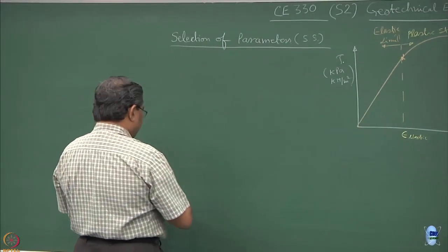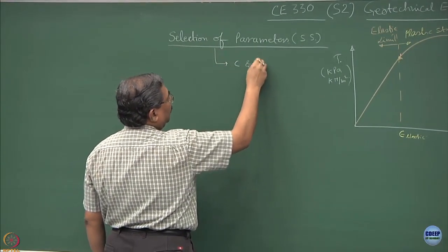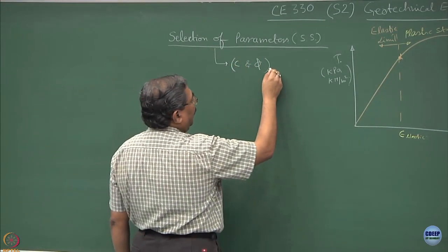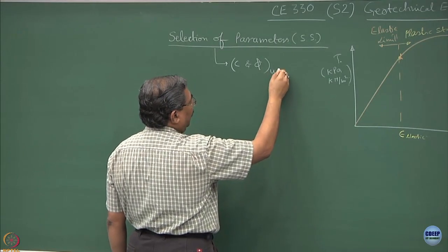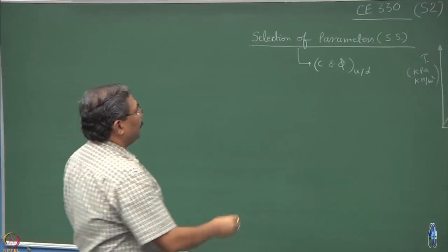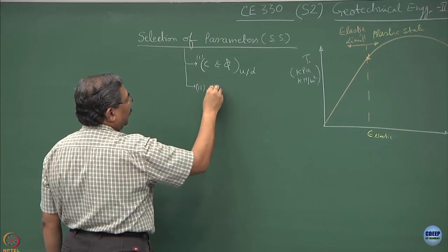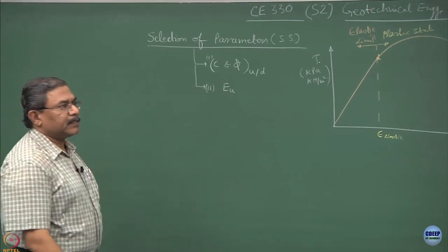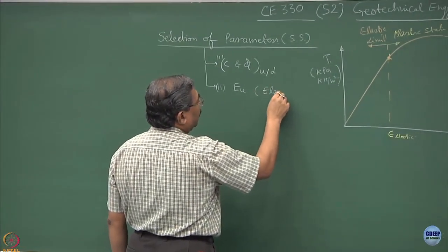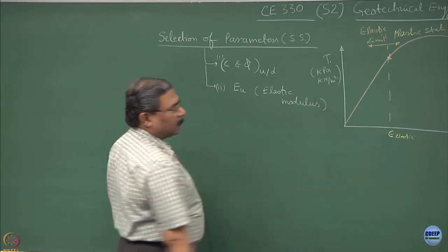Apart from the c and phi, which we have discussed in details, these are the shear strength parameters under undrained or drained conditions. Apart from this, I would also want to find out the Eu, which is the elastic modulus of the soil.